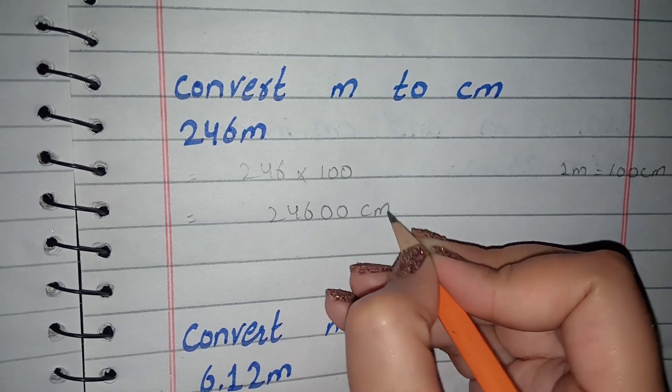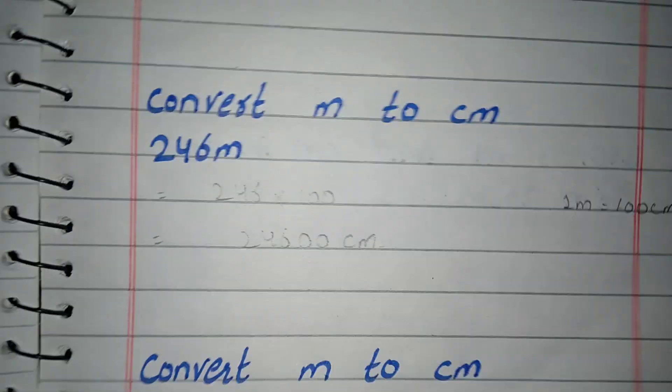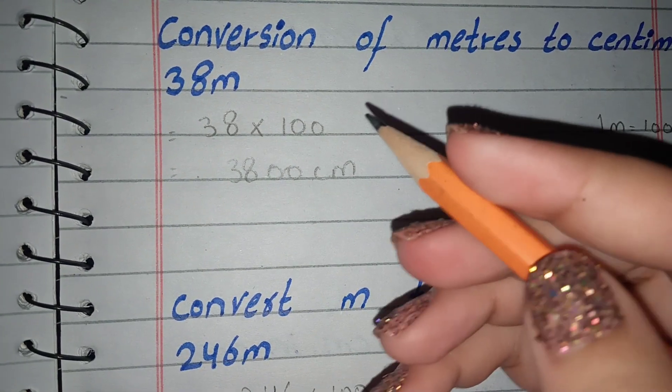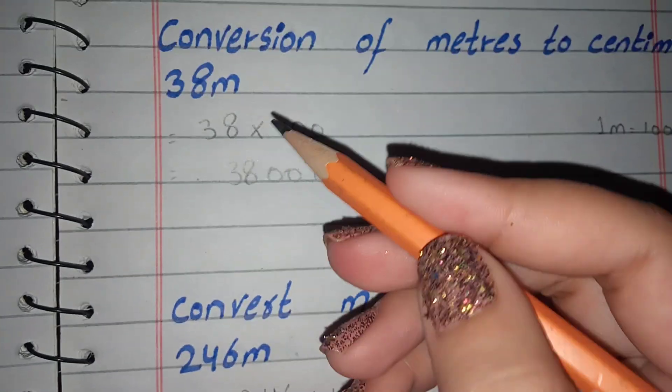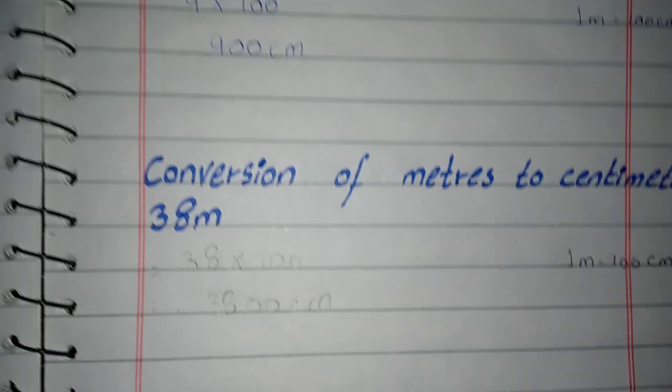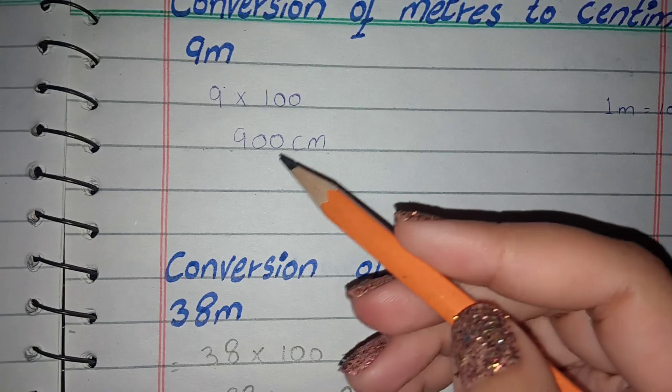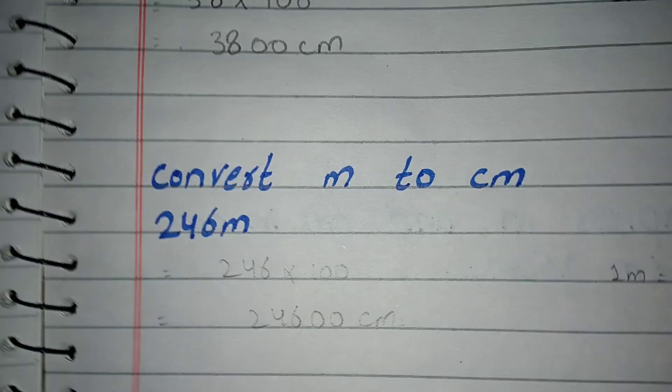If you have a meter, if you have to convert it to centimeters, what do we do? Simply multiply it by 100. If you have 9 meters, it will be 900 centimeters.